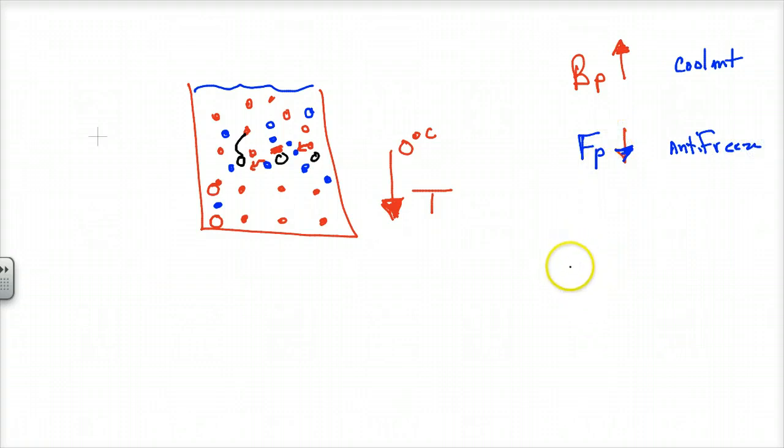In class, I showed you a thumbs up, there's my thumb going up, and I showed you the thumb down. That's the hand signal to show that the higher temperature always goes up. The higher temperature is the boiling. And the freezing temperature, the lower temperature of the solvent, always goes down when you add solute particles.